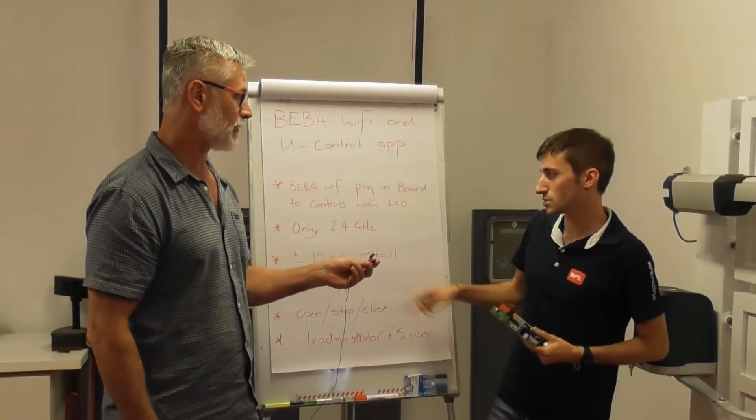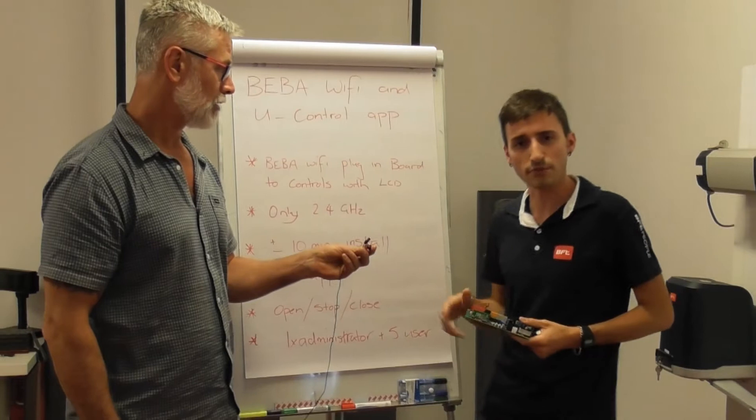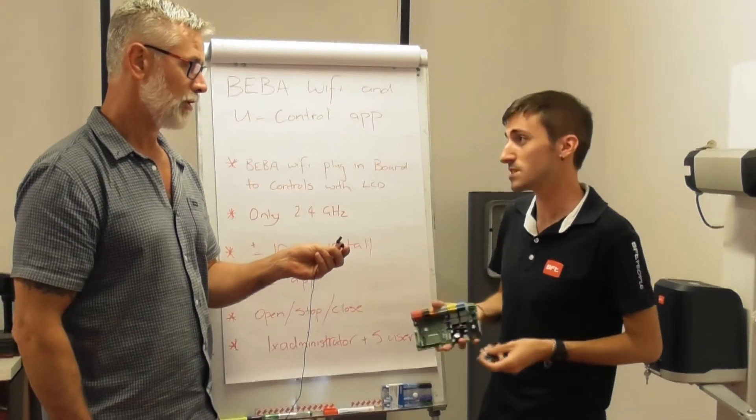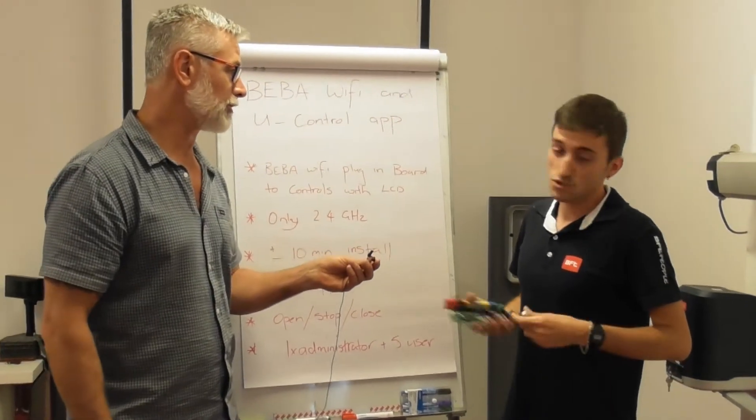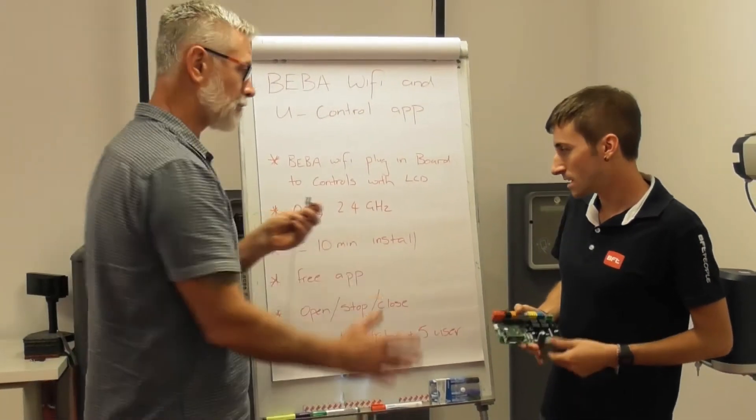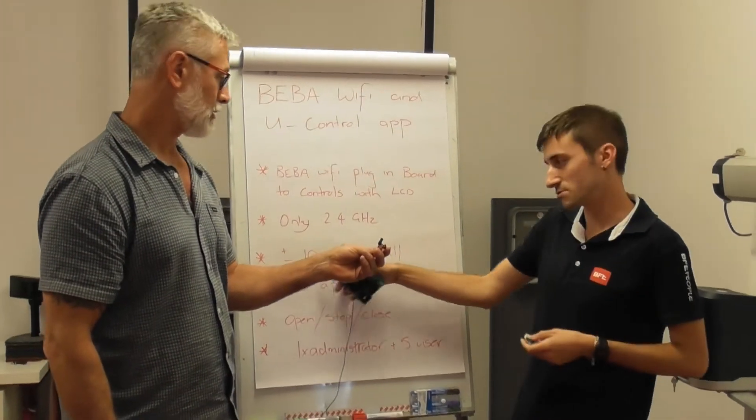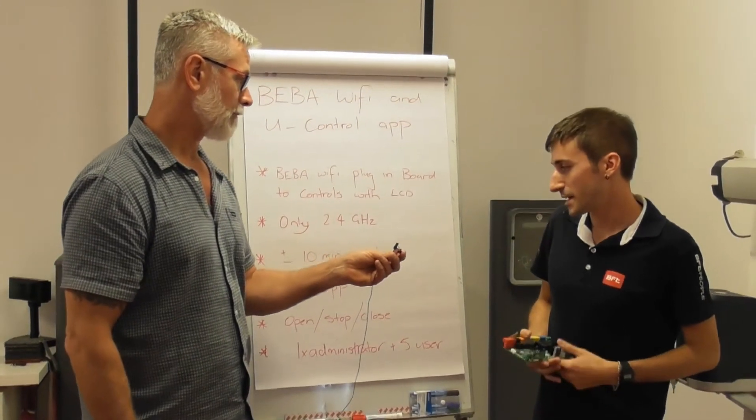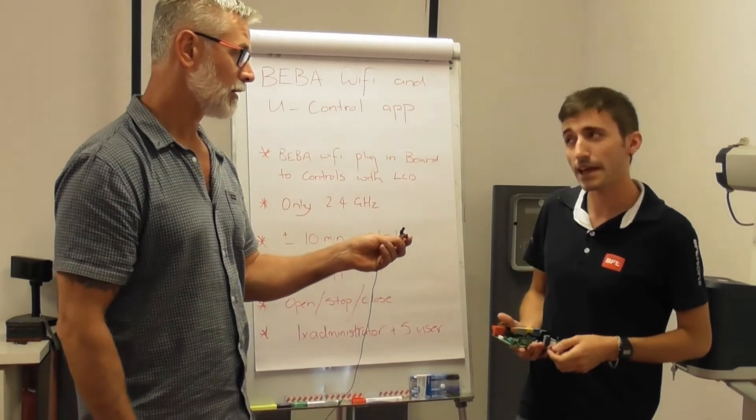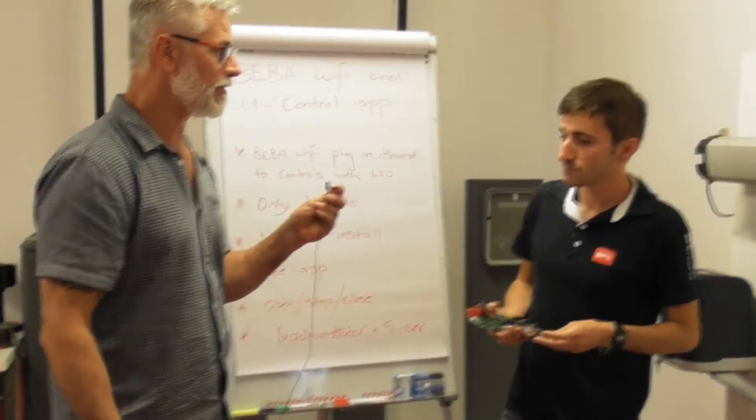What is this 2.4 gigs? Our BeboiFa is working on 2.4 gigahertz. Right now we have as well the 5 giga, but it's not compatible yet with the 5 giga. It's a new generation. And you're saying here that it takes plus minus 10 minutes to install. From when you plug in to the end is about 10 minutes. And the application is free, you can download it from Google Play or Apple Store.